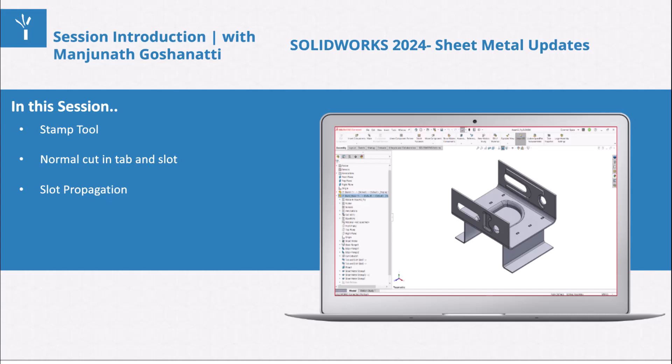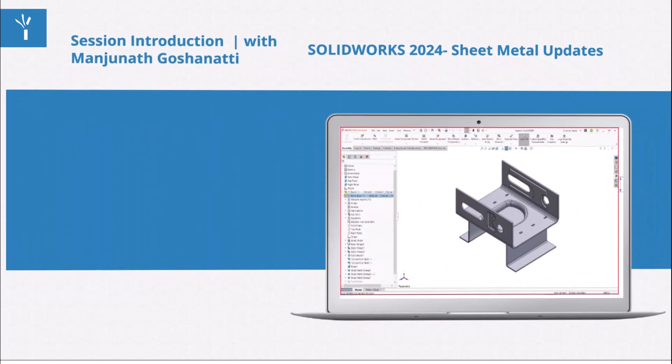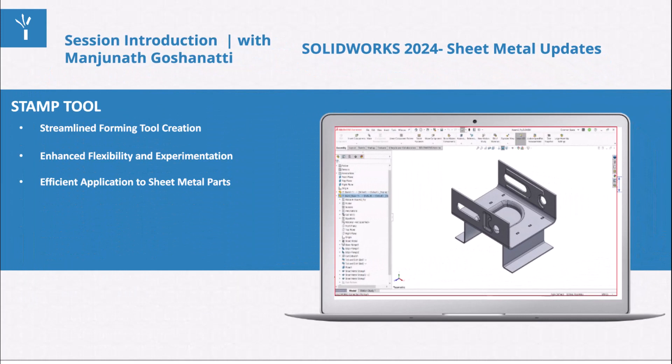In the stamp tool section, we will explore how the stamp tool in SOLIDWORKS simplifies the process of creating forming tools for sheet metal parts by enabling sketch-based parametric designs. We'll learn how this approach reduces the time and effort required to define sketches and features compared to earlier methods. We'll also discover the increased flexibility offered by sketch-based forming tools, allowing users to experiment with various designs and parameters directly within the sketch environment.